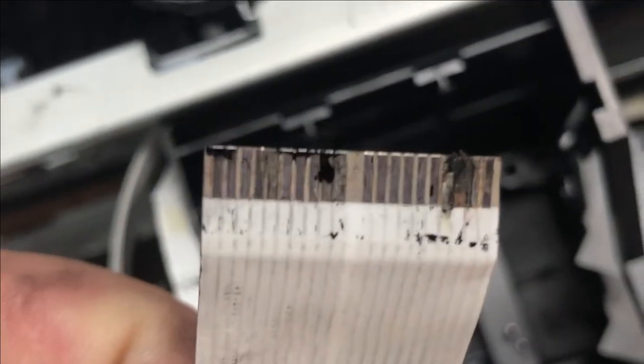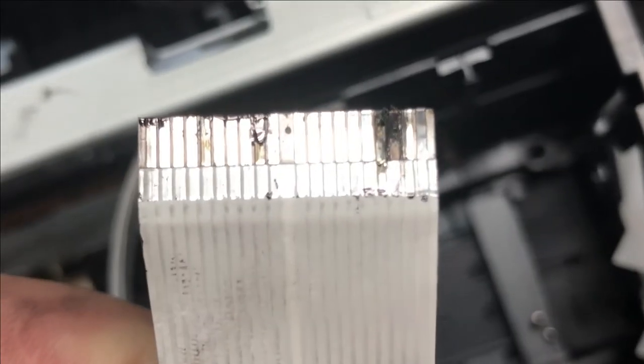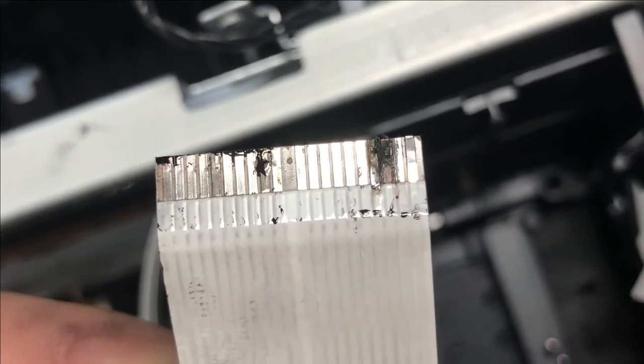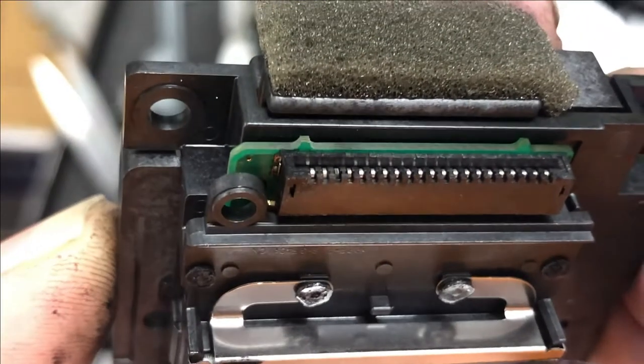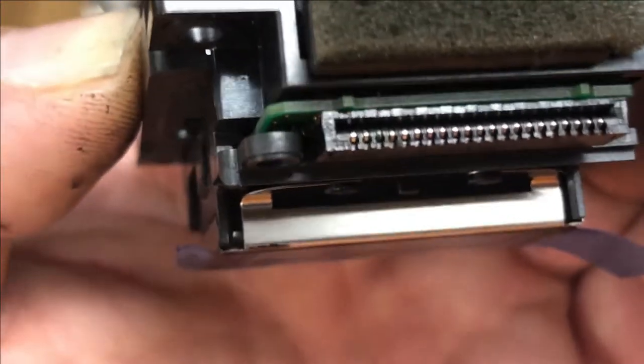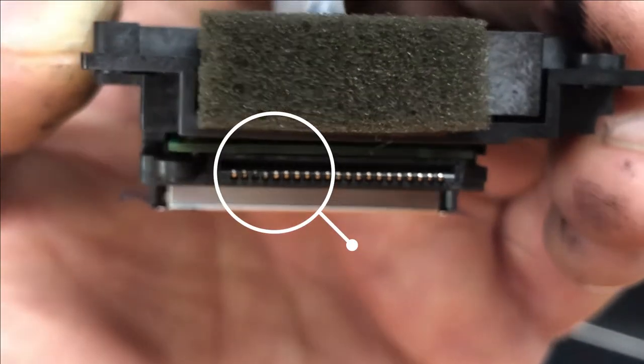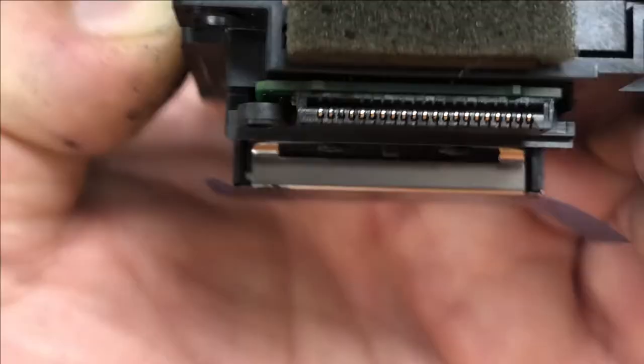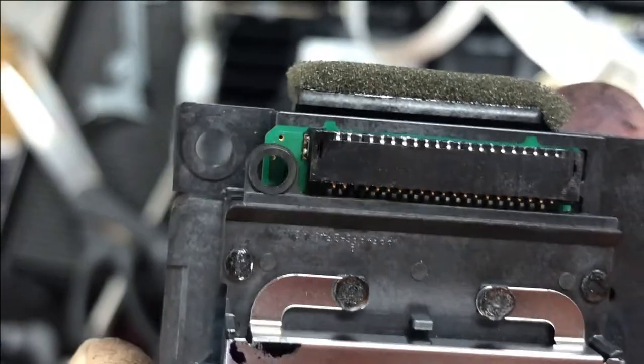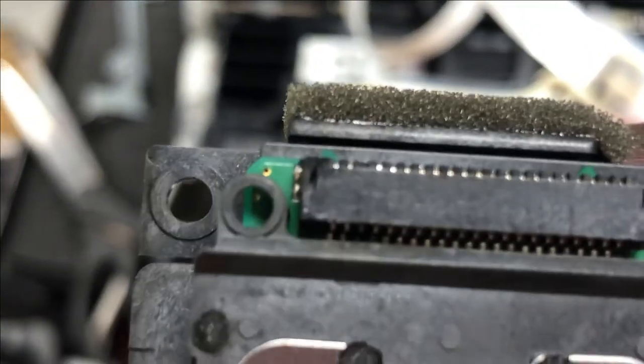After we check the motherboard, now let's take a look at the printhead. You can see there are burn marks on the flex cable. I look at the printhead and we can see the pin is already burned. It's burned inside out. Once the printhead is burned, there's almost no chance that you're going to be able to fix that printhead anymore.